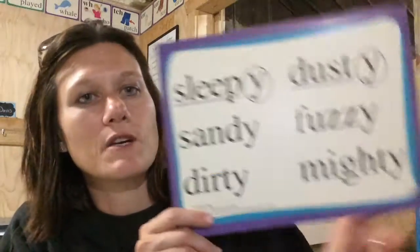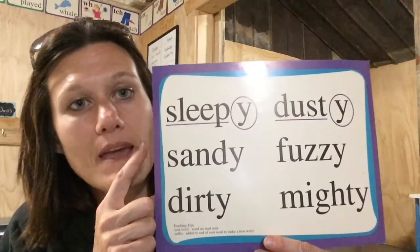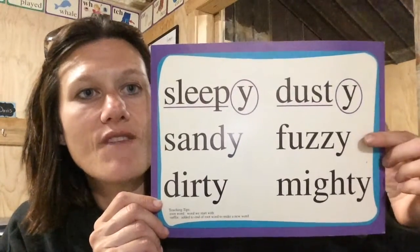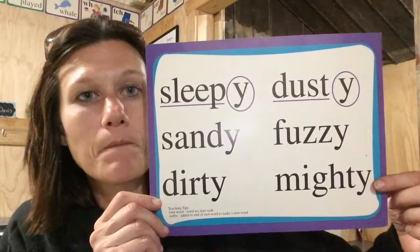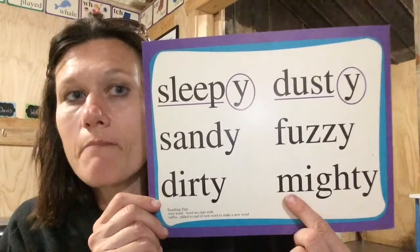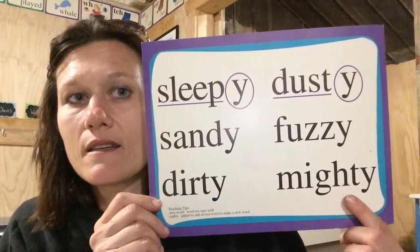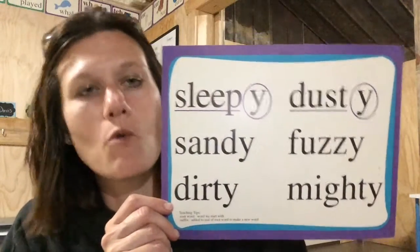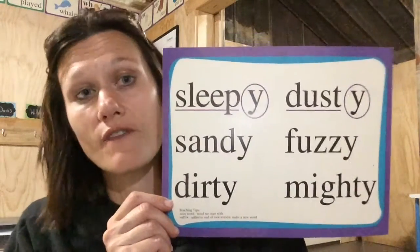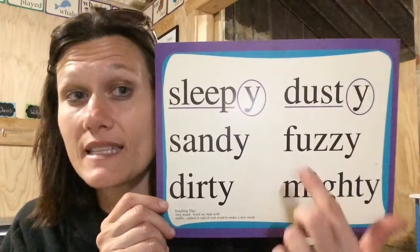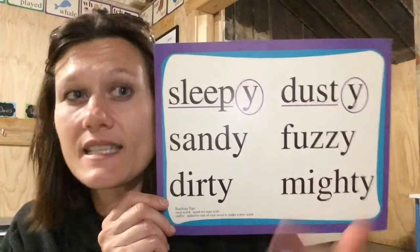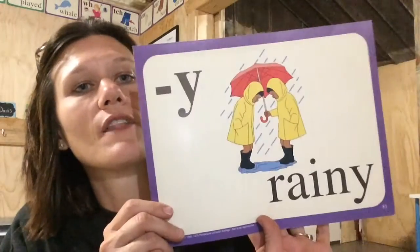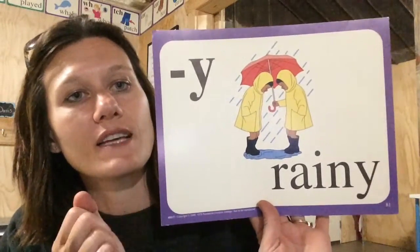Look at these words: sleepy, sandy, dirty, dusty, fuzzy, mighty. You see the root word in mighty is might. The e means like it has or it's full of. So mighty means full of might, and fuzzy means it's full of fuzz. Dusty — full of dust. There is your suffix rainy.